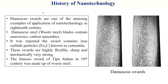Damascus swords are one of the most amazing examples of nanotechnology application in the 18th century. These Damascus steel blades contain lines that indicate nanowires and nanotubes. It has been observed that these swords contain iron carbide nanoparticles, making them highly flexible, very sharp, and mechanically strong. This is due to the use of carbon and carbide nanoparticles. The famous sword of Tipu Sultan in the 18th century was also made as a Damascus sword.